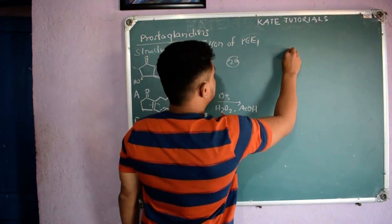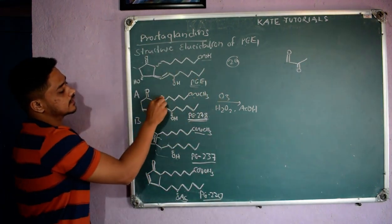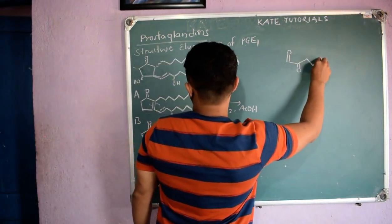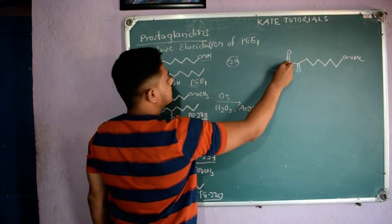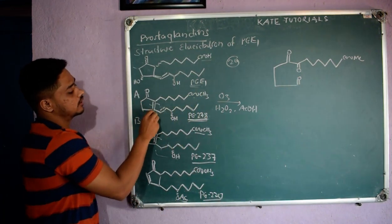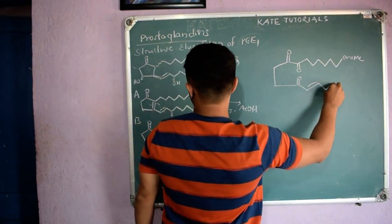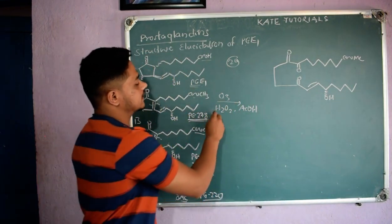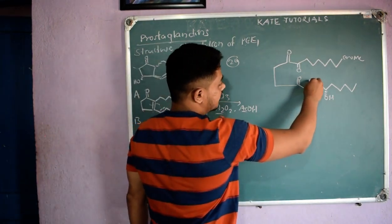Let me break the first pi bond. I get C=O; other things remain as they are — one, two, three, four, five, six, seven carbons — COOCH₃ (or COOMe). On the other side I get C=O, with CH₂CH₂C=O, and here I have OH since the oxidizing agent in acetic acid is used.